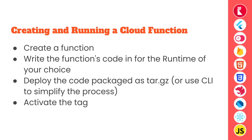What are the steps generally involved in creating and running a cloud function in AppWrite? The very first step is to create a function either in the AppWrite console, using the CLI, or any server-side SDK of your choice. Next you need to write your function's code — whatever you want to execute — for the runtime of your choice.